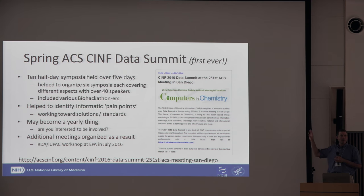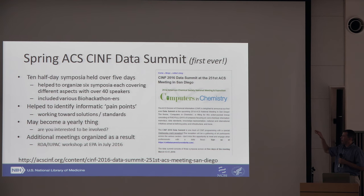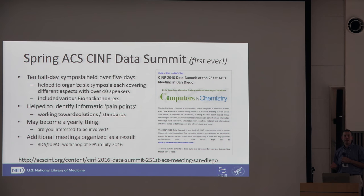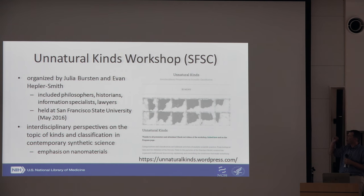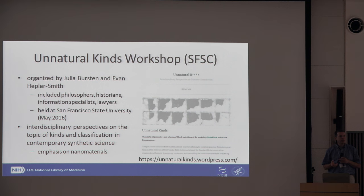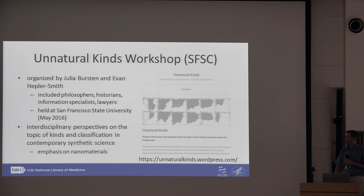We've also been involved in various other data summits. I helped organize six different symposia as part of ten half-day symposia held over five days at the last ACS meeting. We're trying to understand the informatic pain points and rally standards bodies to work together to handle these entities. All of this is important just to describe PubChem semantically — if we don't deal with these issues and get people to agree, it's hard to come up with something the whole community can adopt. We've also been involved in workshops on describing nanomaterials, bringing together diverse people to think about how to describe chemical substances for philosophy, inference, and other purposes.